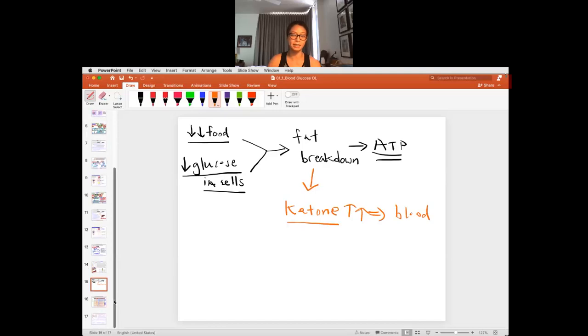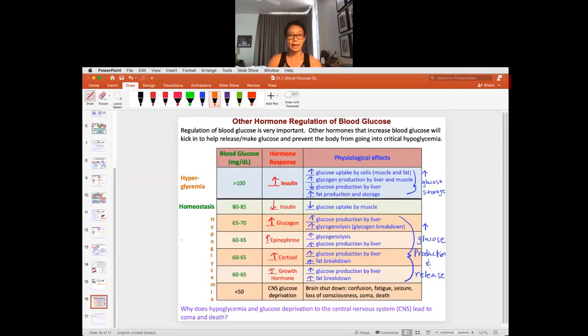Again, I'll talk a little bit more about it in diabetes, diabetic ketoacidosis. So the body, this is a summary figure of hormones that regulate blood glucose. So I want you to review insulin and the lack of insulin and also glucagon. But there are actually other hormones that will kick in to help your body not get into the critical hypoglycemia, which is the blood glucose is lower than 50, because the central nervous system is deprived of glucose and the brain can shut down, leading to coma and death.